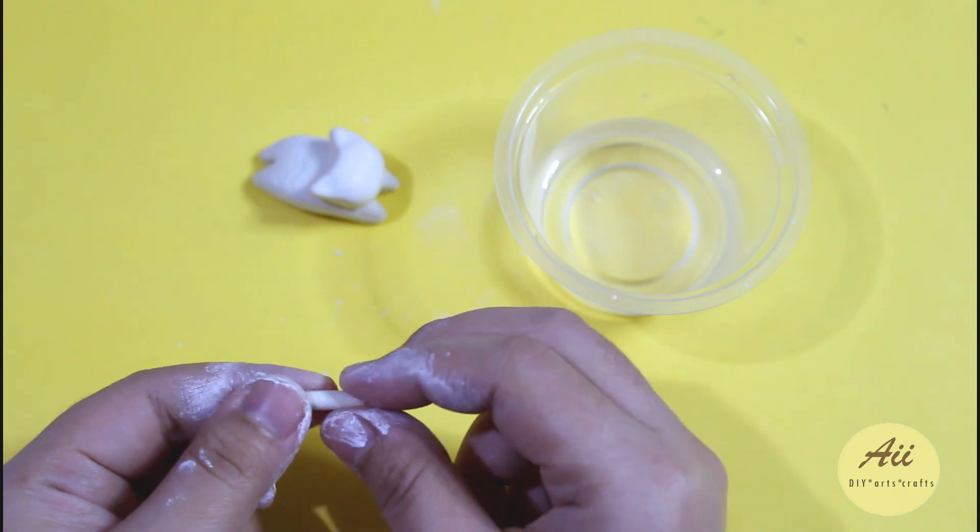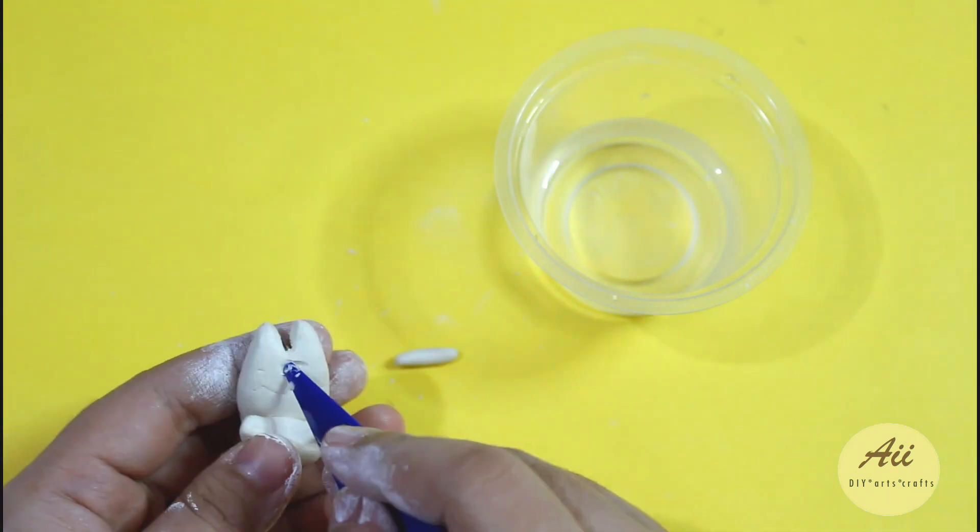With the leftover clay we had earlier make a thin cylinder to create the cat's tail.